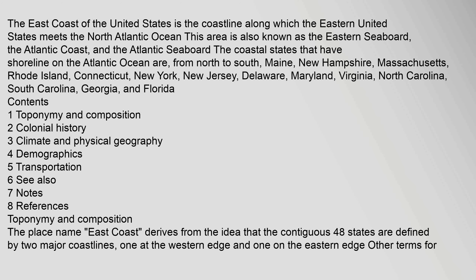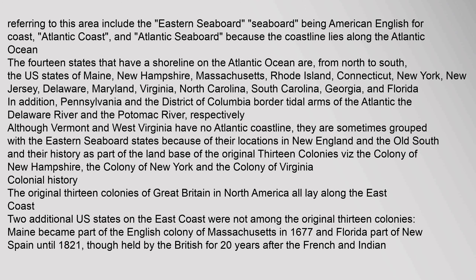The place name "East Coast" derives from the idea that the contiguous 48 states are defined by two major coastlines — one at the western edge and one on the eastern edge. Other terms for referring to this area include the "Eastern seaboard" — seaboard being American English for coast — "Atlantic coast," and "Atlantic seaboard," because the coastline lies along the Atlantic Ocean.